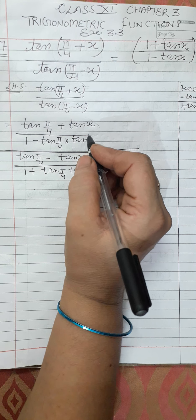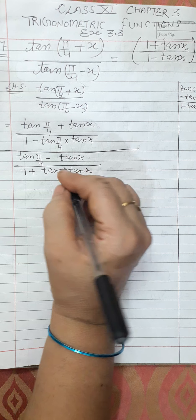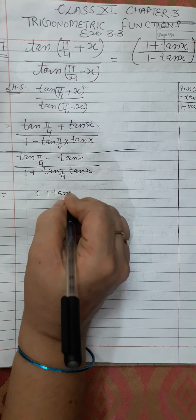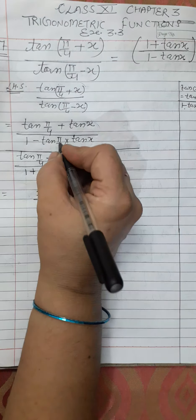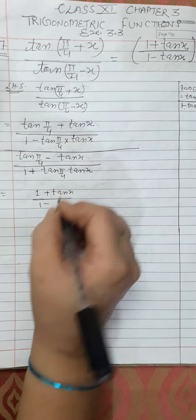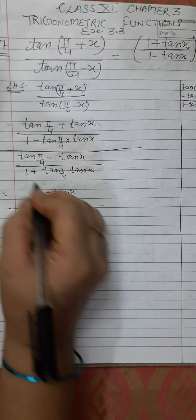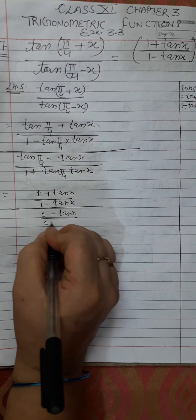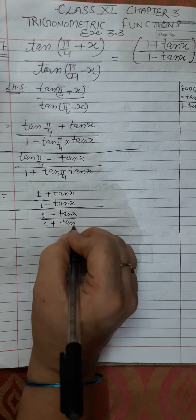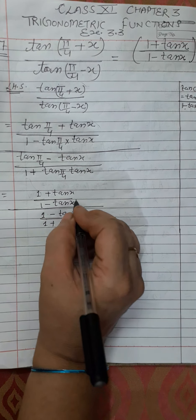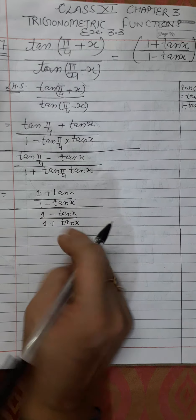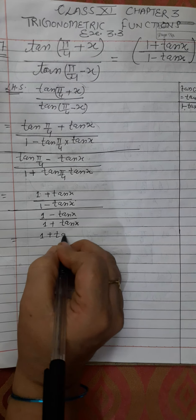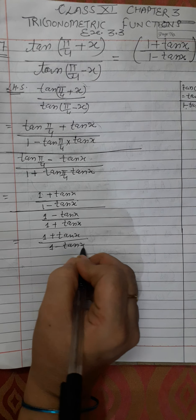In the fraction, the numerator uses the tan(a + b) identity and the denominator uses the tan(a − b) identity. Now, since tan(π/4) = 1, the numerator simplifies to (1 + tanx) upon (1 − tanx), and the denominator simplifies to (1 − tanx) upon (1 + tanx).